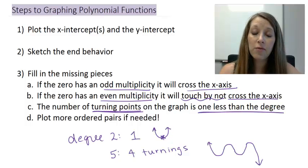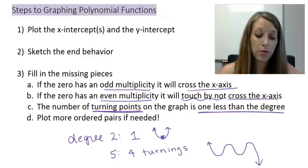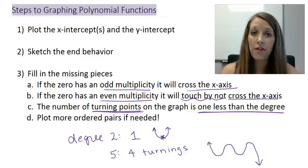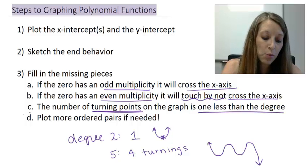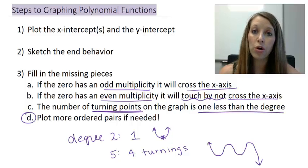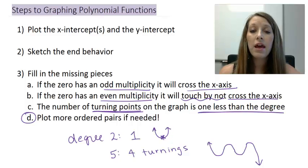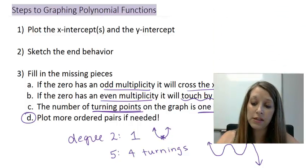Now, if that information there, steps one through three C, is not enough information for you to get a full graph, you are always more than welcome to plot more ordered pairs than needed. Just start picking strategic x values and see the y values that go with it and plot that ordered pair on the graph. So I have two examples of this here.